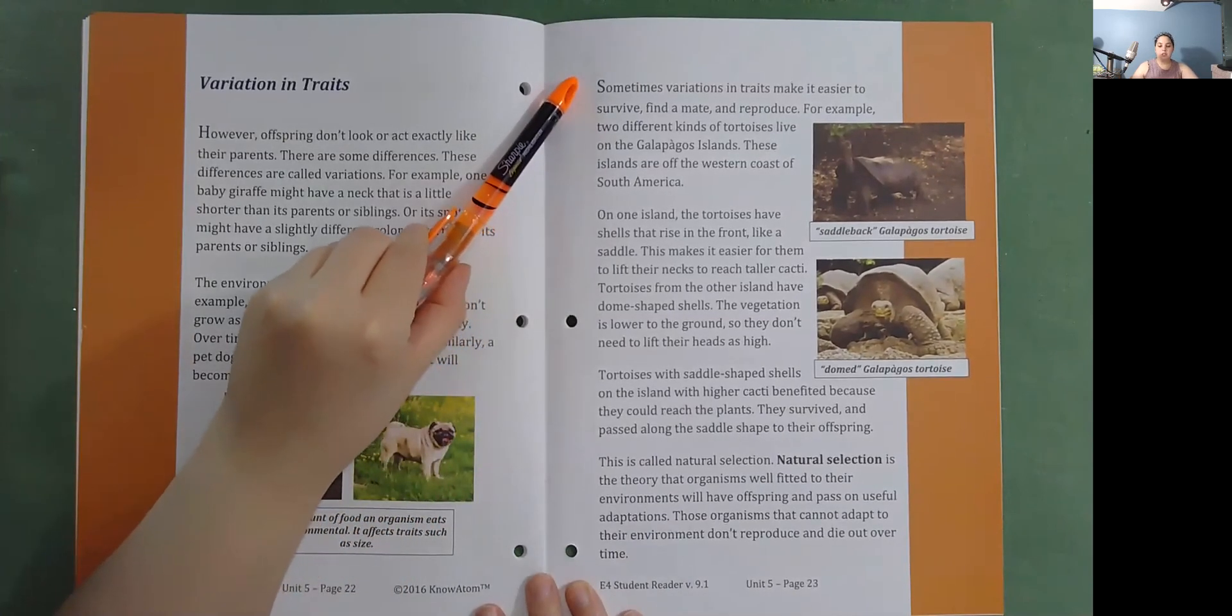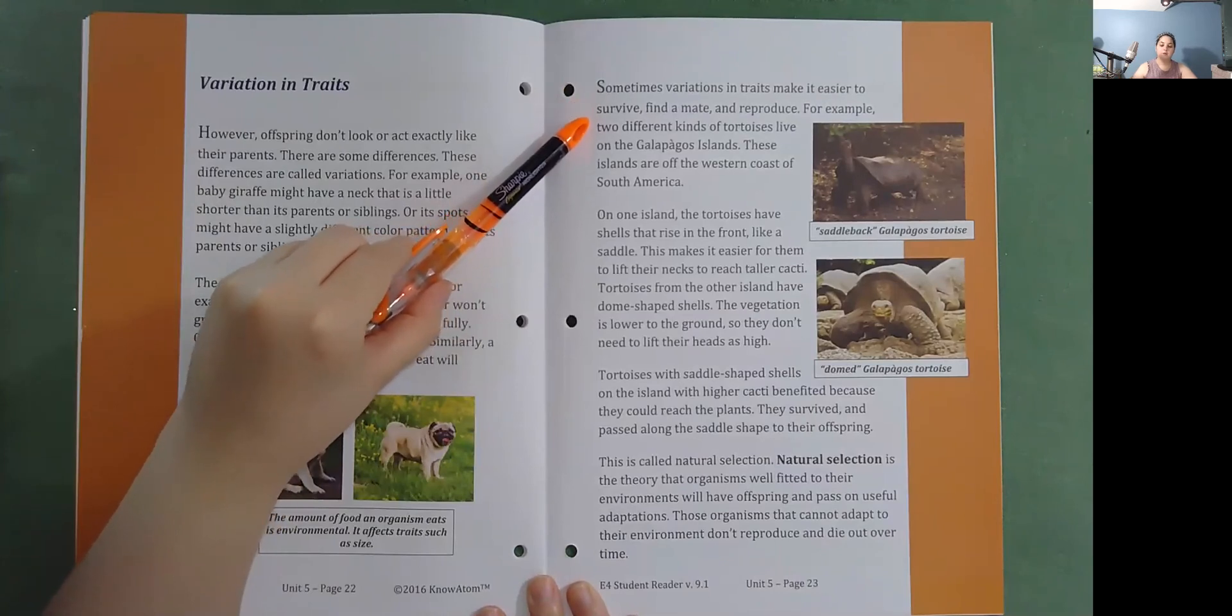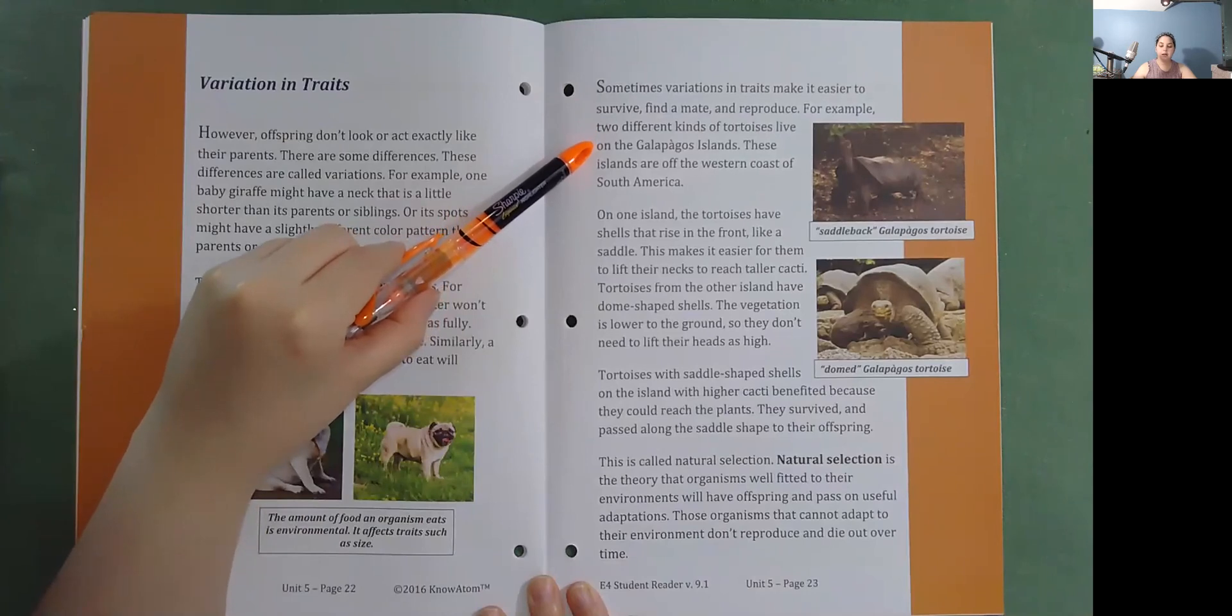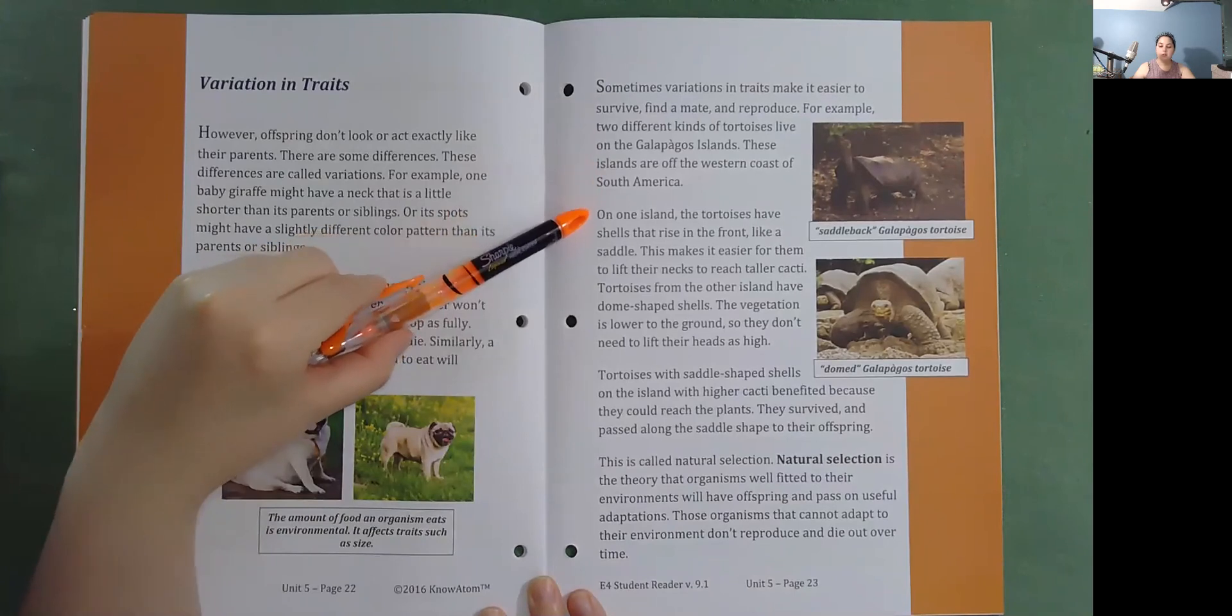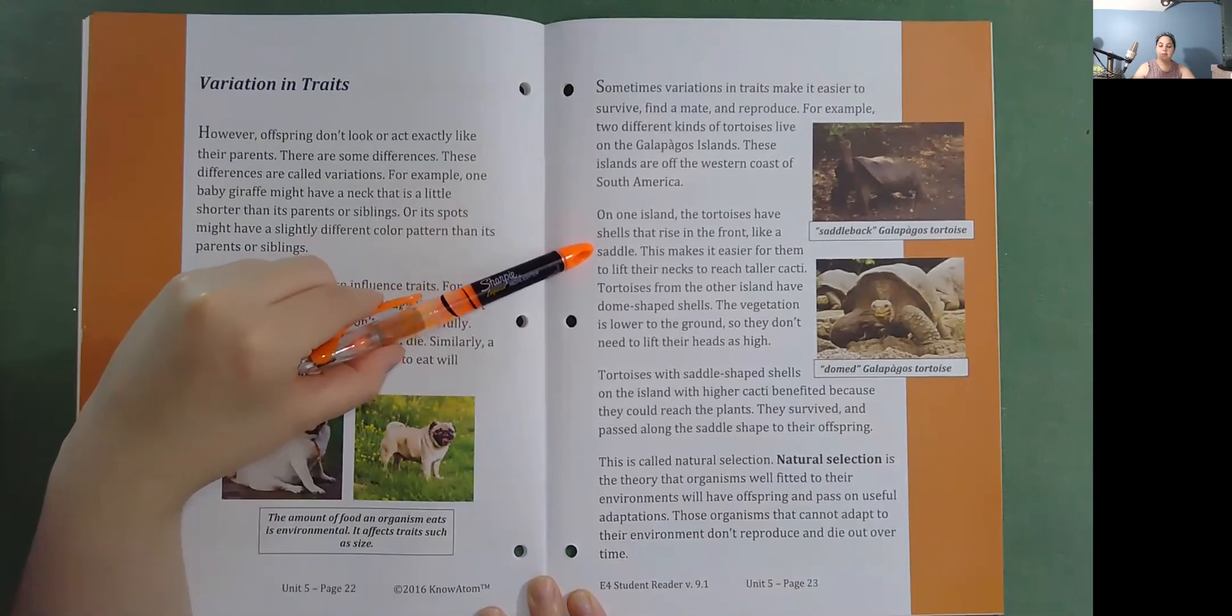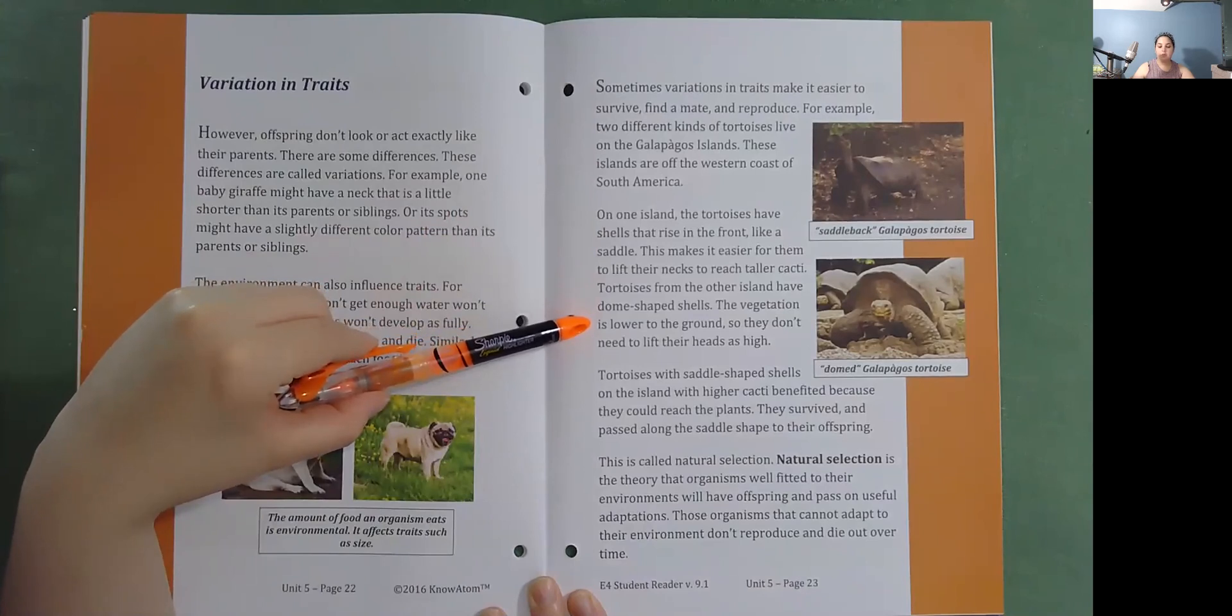Sometimes variations in traits make it easier to survive, find a mate, and reproduce. For example, two different kinds of tortoises live on the Galapagos Islands. These islands are off the western coast of South America. On one island, the tortoises have shells that rise in the front like a saddle. This makes it easier for them to lift their necks to reach taller cacti. Tortoises from the other island have dome-shaped shells. The vegetation is lower to the ground so they don't need to lift their heads as high.